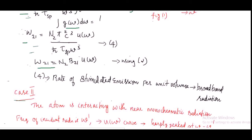From equation 2, B₂₁ = π²c³ / (ℏω³τsp). Substituting this, equation 4 becomes W₂₁ = N₂ · B₂₁ · u(ω), which is the same as the equation obtained earlier. Thus equation 4 represents the rate of stimulated emission per unit volume when the atom interacts with broadband radiation.